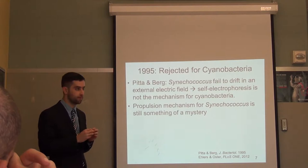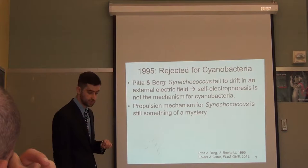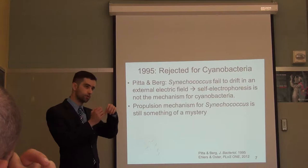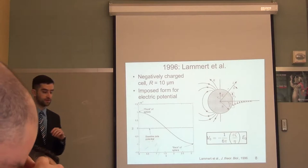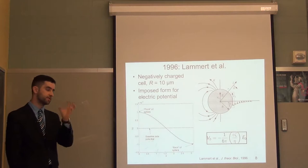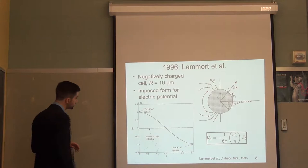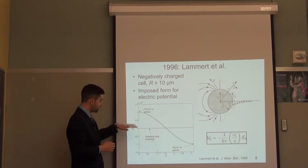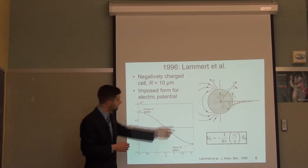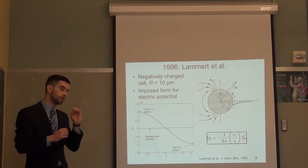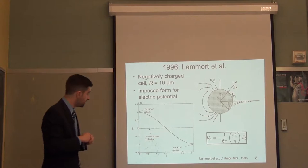Research is still ongoing into the mechanism for this bacterium. There was a paper recently proposing that they have a kind of helical rotor inside their bodies that's hard to see. The following year, Lammert and others provided one of the first detailed quantitative analyses of self-electrophoresis. They considered a spherical cell with a negative surface charge, 10 microns in radius, with a sinusoidal variation of electric potential along the surface — slightly positive toward the front and slightly negative toward the end. That potential variation generates an electric field E, which because the cell is charged, exerts a force on the cell and propels it forward. Their result for swimming speed is quite similar to the Smoluchowski expression.